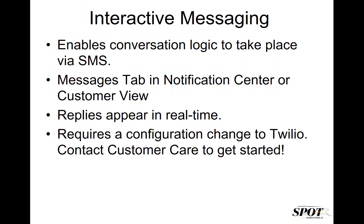With the Notification Center, you are also able to take advantage of a new feature called Interactive Messaging. Interactive Messaging is essentially the creation of a text message thread with a customer. While Spot has been able to handle SMS replies from customers for some time, there was never really any concept of a message thread with that customer — and that's what Interactive Messaging will change. Using our API, we basically create a conversation with a customer each time we text them. And if they text back, we can see those messages in real-time using the Messages tab available in both the Notification Center and the customer view.